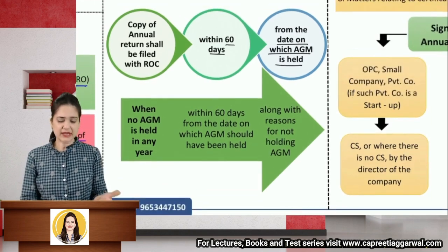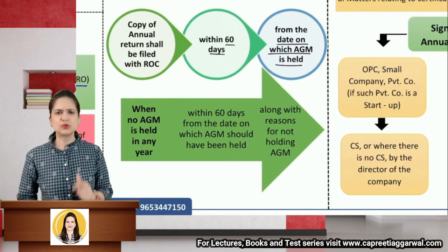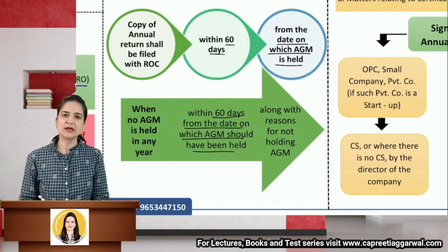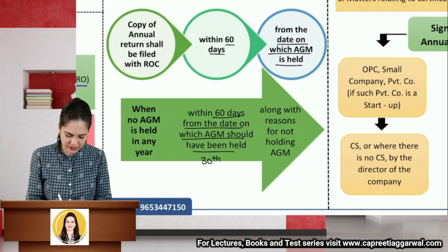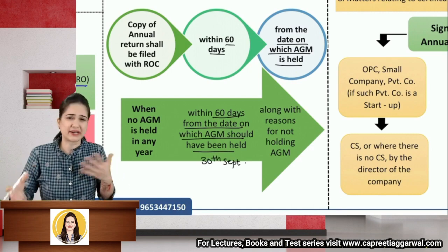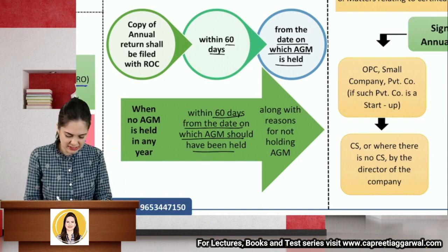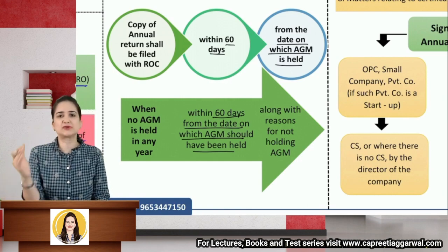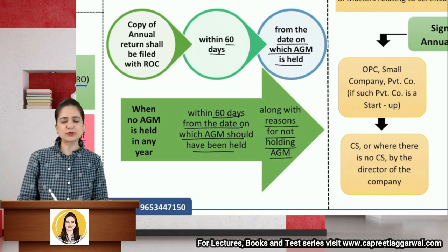If the AGM is not held in a particular year, you still need to file the annual return within 60 days from the date on which the AGM should have been held. Normally the AGM is to be held within six months from the closure of the financial year, making the last day ideally 30th September. From that date, within 60 days, you must file the annual return and also state the reasons for not holding the AGM.